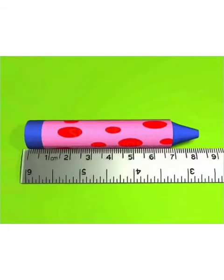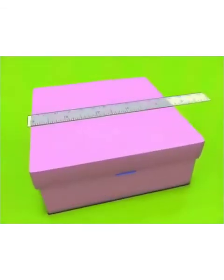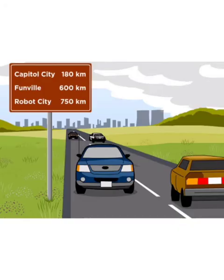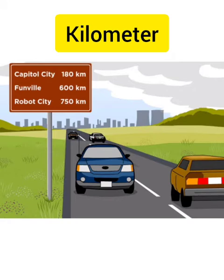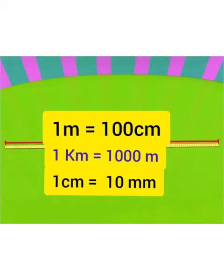The longest units are measured in kilometer. Now, let us know about the conversion. 1 meter is equal to 100 centimeter. 1 kilometer is equal to 1000 meter. 1 centimeter is equal to 10 millimeter.